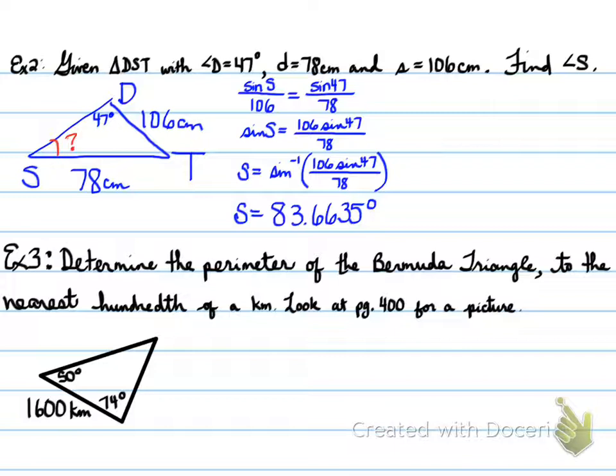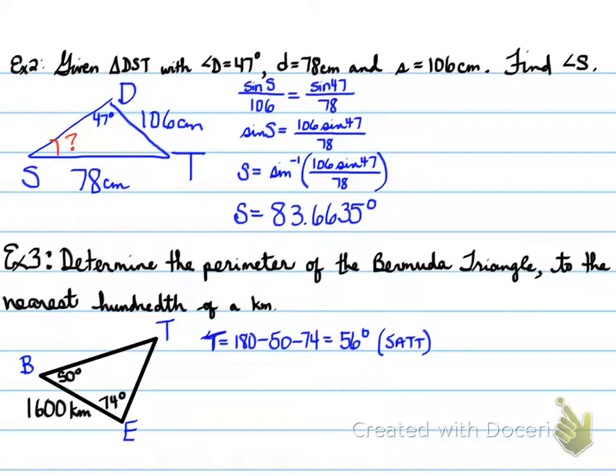Example three, determine the perimeter of the Bermuda Triangle to the nearest hundredth of a kilometer. Here is an example of a triangle that could be the Bermuda Triangle. We're going to put B for Bermuda, T for Triangle, and E for Exists. We're given two angles and a side. Are we allowed to use sine law? The answer is yes, because with any two angles and any side, you can use it. Using SATT, we find angle T equals 56 degrees.